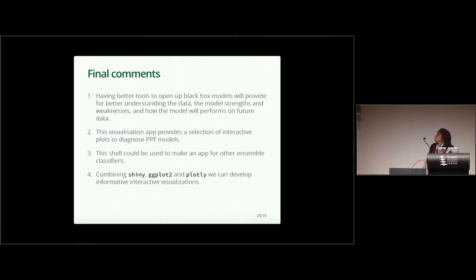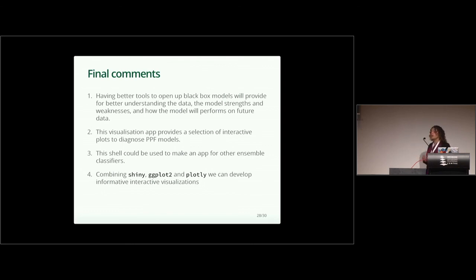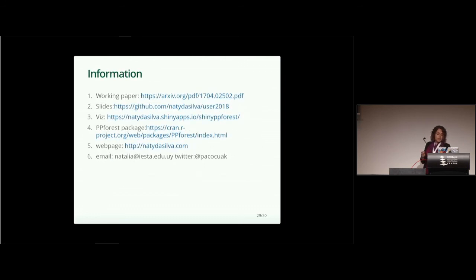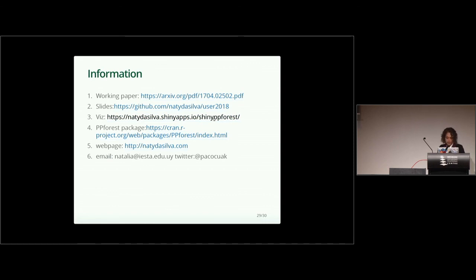As final comments: having better tools to open black box models is useful to see and understand what our model is doing, and we can go back and forth and change parts of our model. The visualization app provides a selection of interactive plots to diagnose PP forest, but it can be extended to other ensemble methods. Combining Shiny, ggplot, and Plotly is a very powerful tool for making explorations and understanding our models better. We have a working paper, slides, and a live example available if you want to explore further.